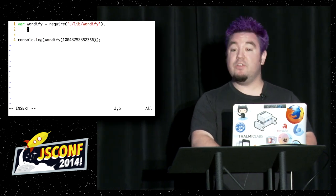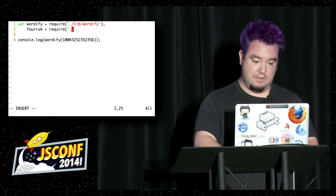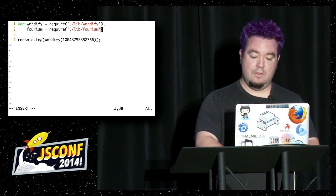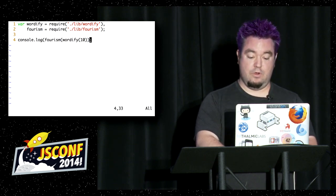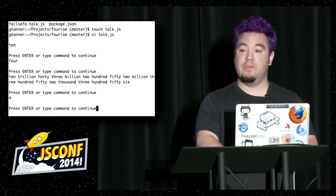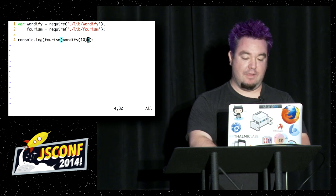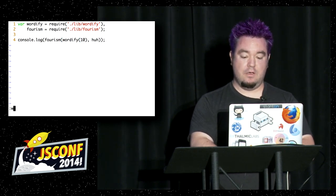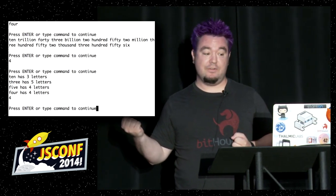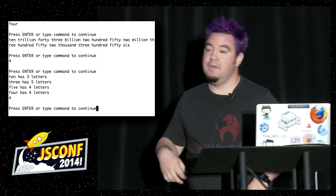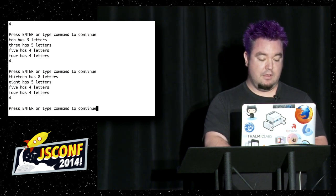We also needed to do the little game my daughter played. We can take the number 10, pass the word to fourism, and it returns four. If you expand it out, you'll see that exchange: 10 has three letters, three has five, five has four, and four has four. I played around with 13 — also four. Weird.